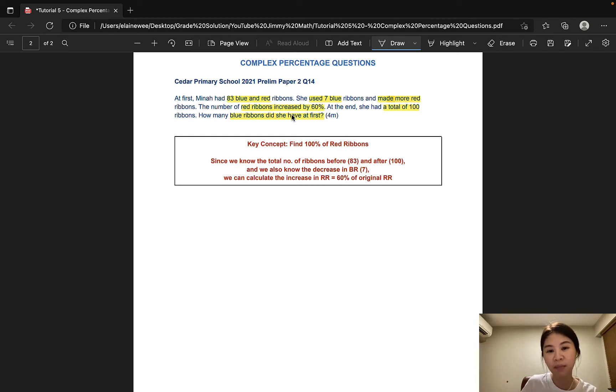Since this is a before and after question, we can make use of the BCA model. Before, change, and after. And we are comparing the blue ribbons, red ribbons, and I will also add a column for total, since we know the total number of blue and red ribbons before and after.